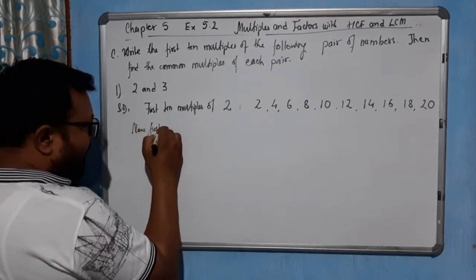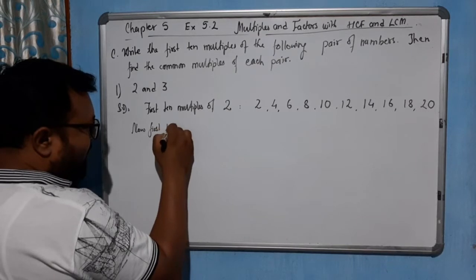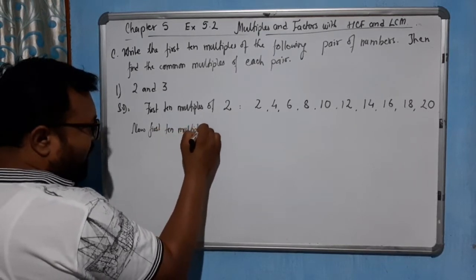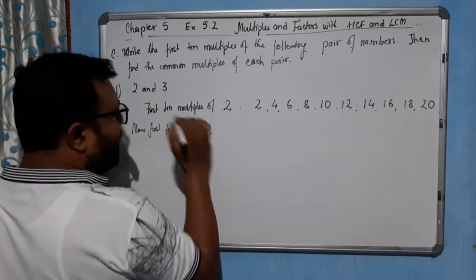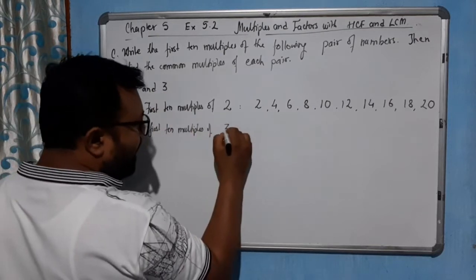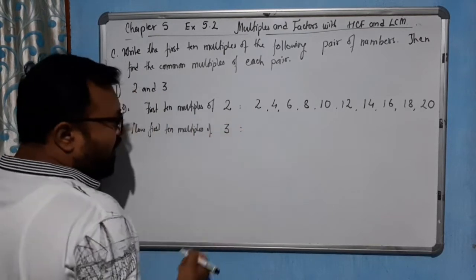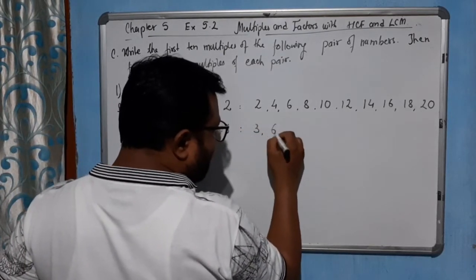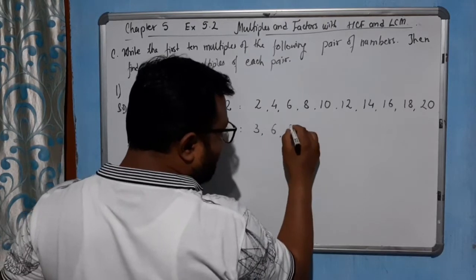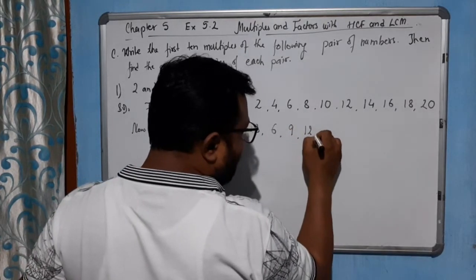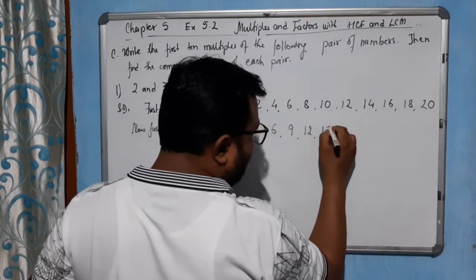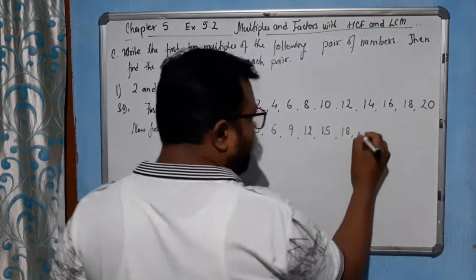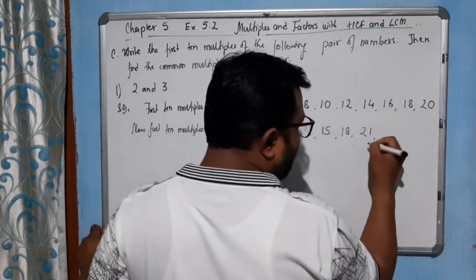Now the first 10 multiples of 3. So: 3×1=3, 3×2=6, 3×3=9, 3×4=12, 3×5=15, 3×6=18, 3×7=21.